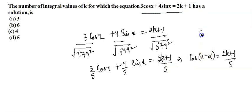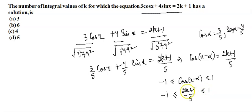And here we have used cos alpha as 3/5 and sin alpha as 4/5. Now we know that cos(x minus alpha) lies between minus 1 and 1. That means 2k plus 1 divided by 5 lies between minus 1 and 1. So from here we can say that 2k will lie between minus 6 and 4.